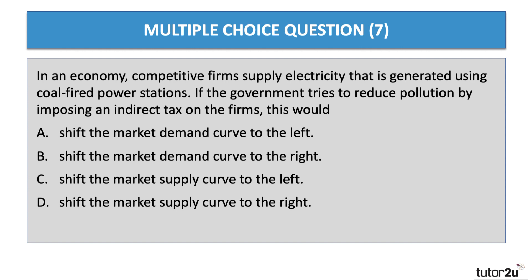These are all past exam questions. Question 7: In an economy, competitive firms supply electricity generated using coal-fired power stations. If the government tries to reduce pollution by imposing an indirect tax on the firms, what would that cause? This takes us back to the idea of pollution taxes. A tax will affect the actual and marginal supply costs of a firm. So the right answer is C — it's going to shift the market supply curve to the left, because those electricity companies will have higher costs if they continue to use coal-fired power stations.